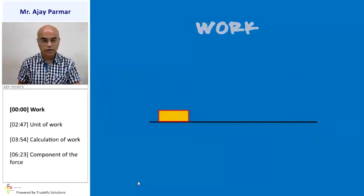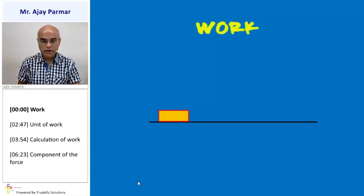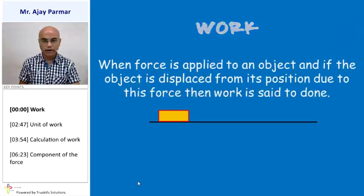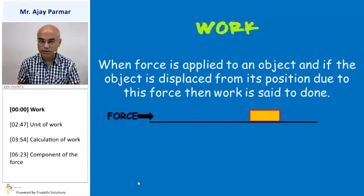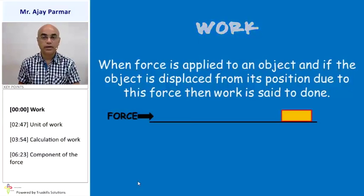When do we say that work is being done on any object? For understanding this, we need to understand that when force is applied on any object, and that object displaces under the effect of that force — that means it changes its position — then we say that work is being done on that object due to that force.